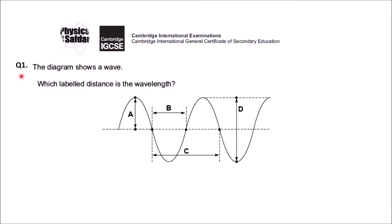On the screen you can see one question that I took from the past paper. The question is: the diagram shows a wave — which labeled distance is the wavelength? You can see clearly on this diagram you have a wave with crests and troughs, and a few labels: A, B, C, and D. You need to select which one is the right answer for the wavelength.